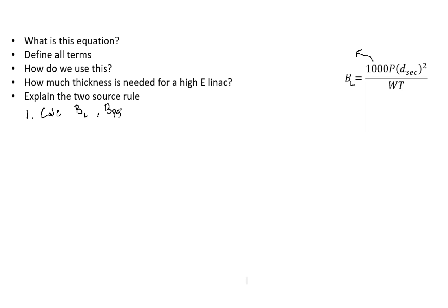So the whole point of this is to find a secondary barrier. This doesn't have anything to do with primary barrier, but a secondary barrier. So when you take these two, you do the two source rule, 2SR. That's what that stands for. And that is how we are going to get our secondary barrier thickness.